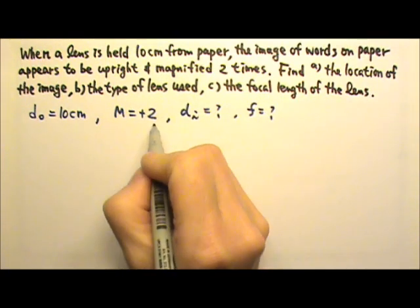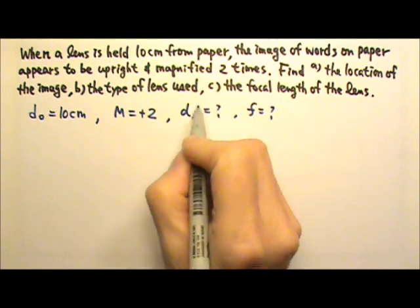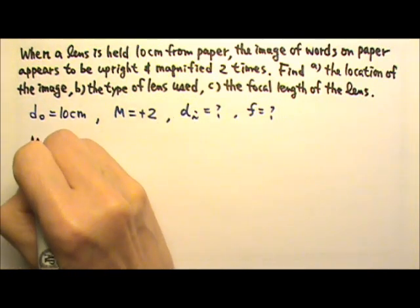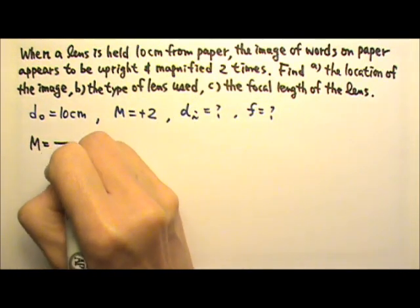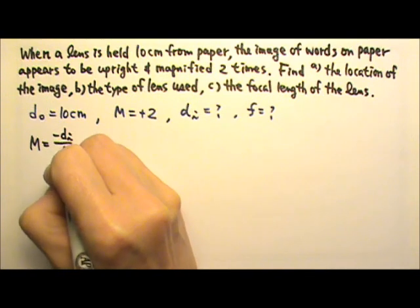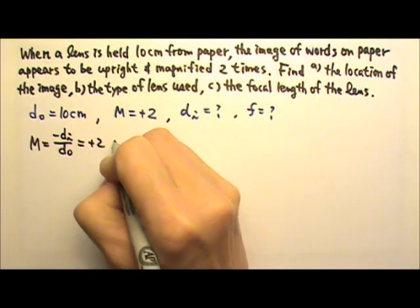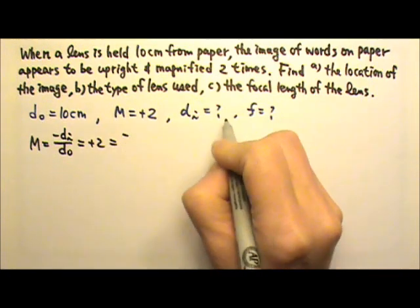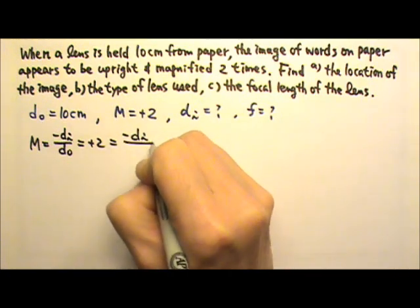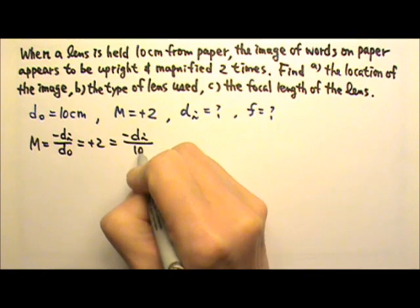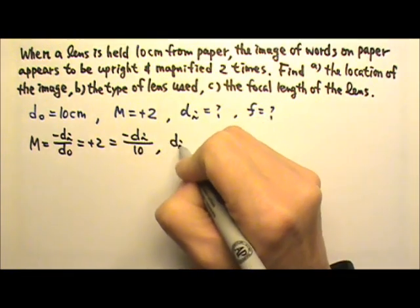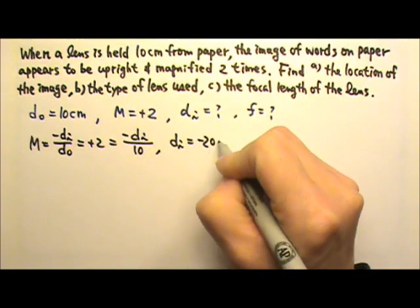First we can use the magnification equation to find the DI. The magnification is negative DI over DO, and this is positive 2. So it's negative DI over 10. Therefore we get DI must be negative 20 cm.